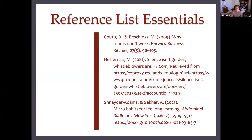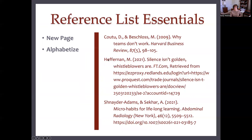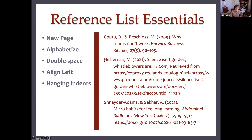So what is included in a reference list? First of all, you need to start with a new page — even if the last page of your essay only has four lines on it and three-fourths of the page is empty, you need to start your reference list on a new page. And you need to alphabetize by the last names of the authors. Then double spacing. You'll notice that it's left aligned, not justified on the right — left aligned with a hanging indent.